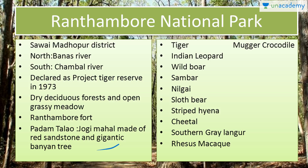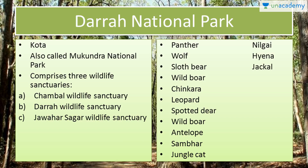Next we have Darrah National Park in Kota, also called Mukundra National Park. It is made up of three wildlife sanctuaries: Chambal, Darrah and Jawahar Sagar. Animal species include panther, wolf, sloth bear, wild boar, chinkara, leopard, spotted deer, antelope, sambar, jungle cat, nilgai, hyena and jackal.